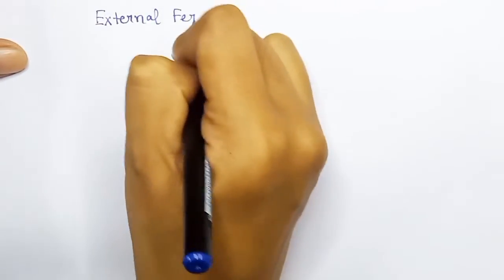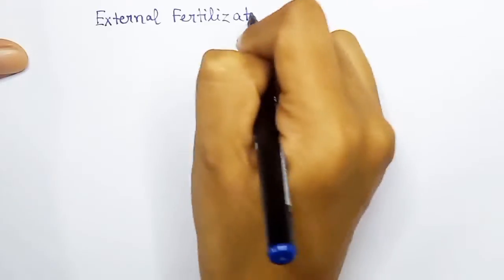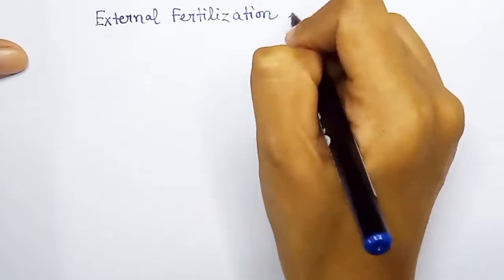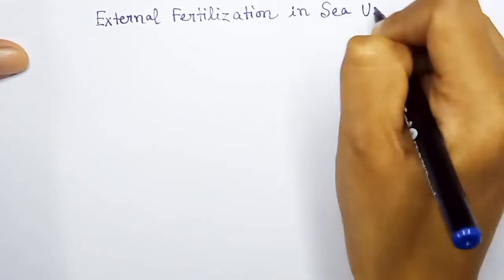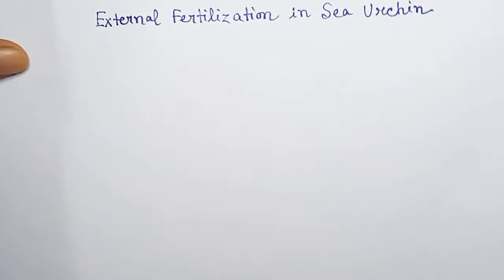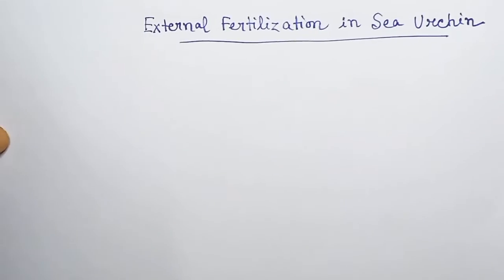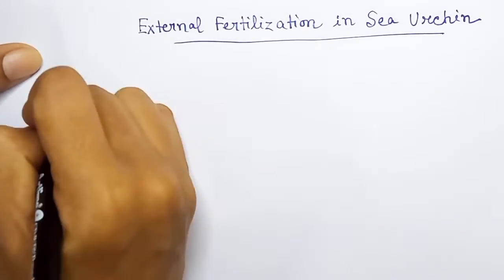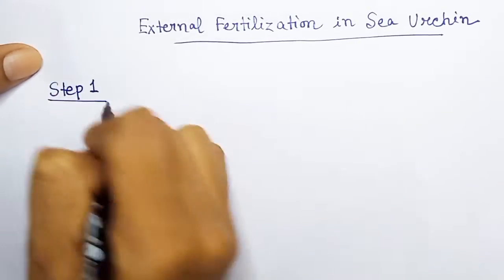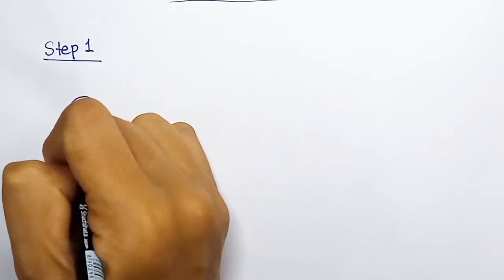In this video, we are going to talk about external fertilization in sea urchin. External fertilization means the fertilization of the egg and the sperm will occur outside the body. So the eggs and the sperms are released in the environment, such as in the water.